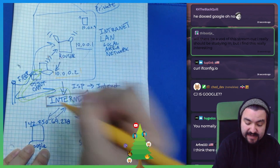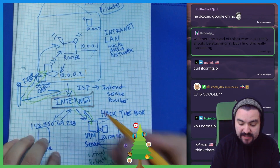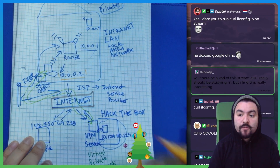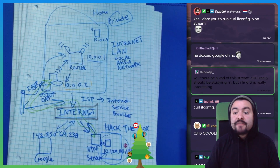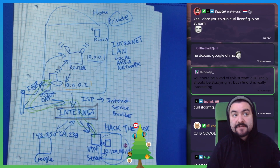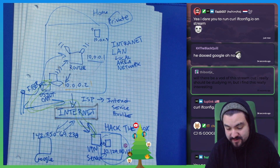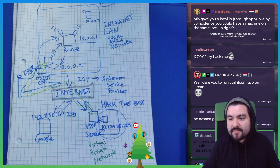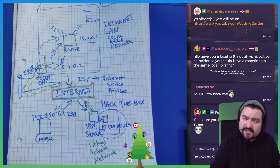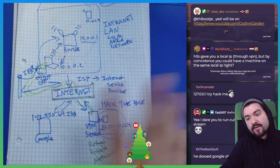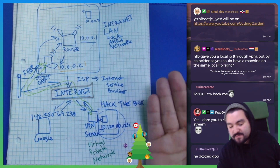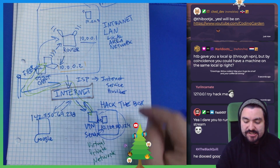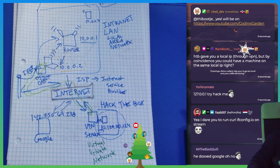My home network technically does have a public IP address, and that's assigned through my internet service provider. That's something I wouldn't want to leak, because people could potentially try to get into my network if they knew my public IP address. What's nice about my internet service, though, is all I have to do is reboot my modem and I get a brand new IP address. Not all ISPs work that way — depending on your ISP, you might get a static IP address that never changes.